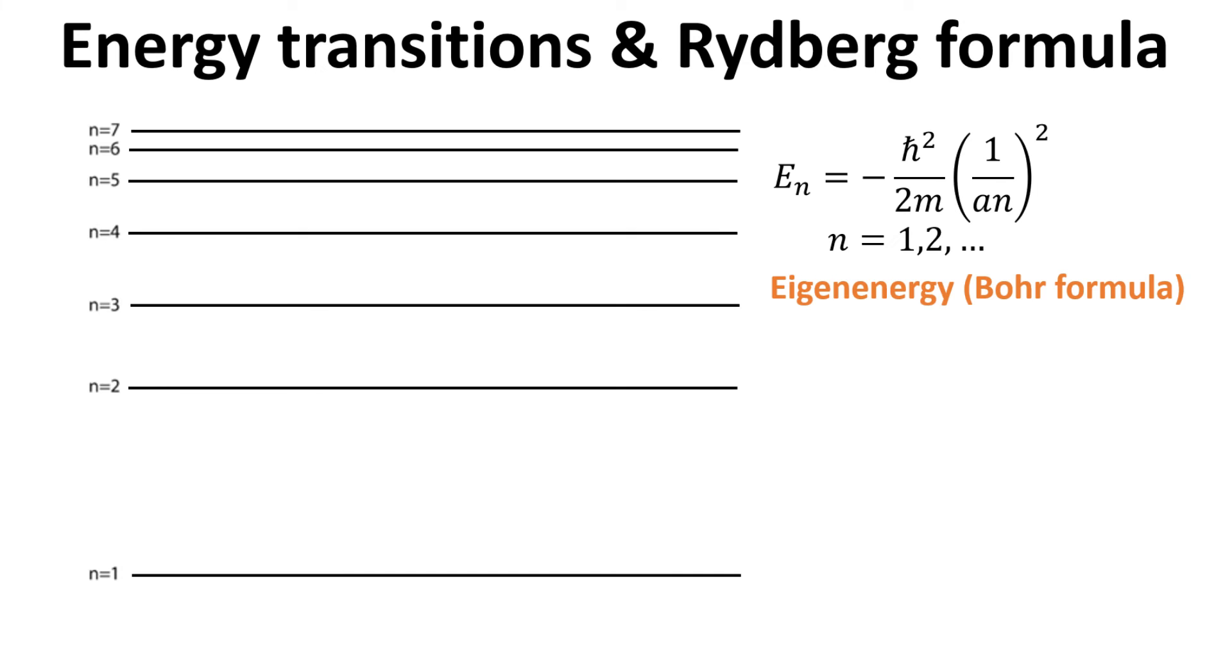How about the eigenenergies? The energy spectrum of the electron in the hydrogen atom is given by the Bohr formula, and we plot here for energies corresponding to n equals 1 to 7. The energy spacing decreases with increasing n.